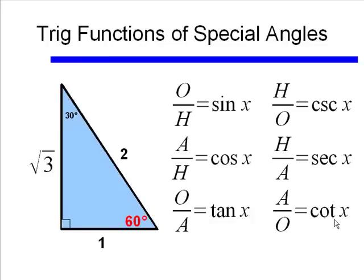Remember we talked about these three special angles: 30 degrees, 45 degrees, and 60 degrees. Let's start off by looking at our 30-60-90 triangle, and start figuring out some of these values for our trigonometric functions.